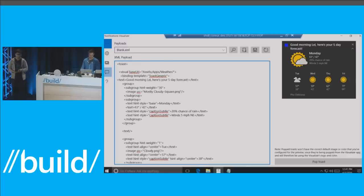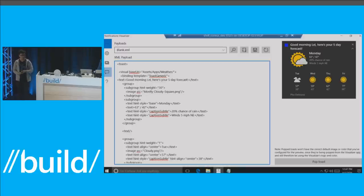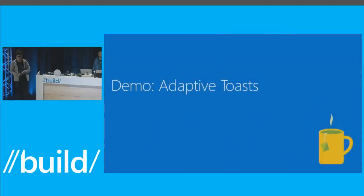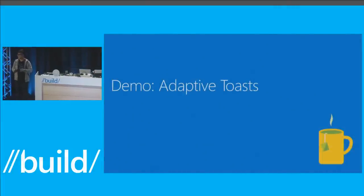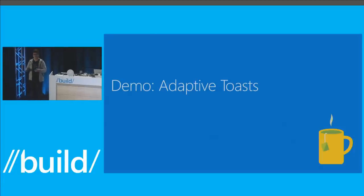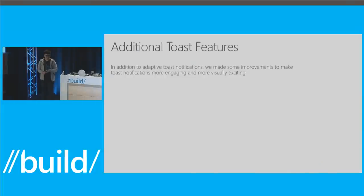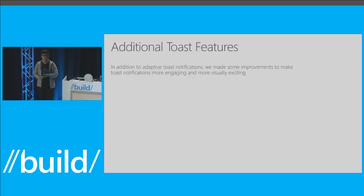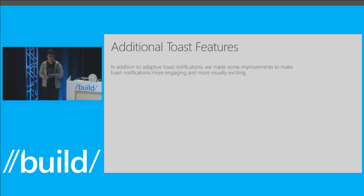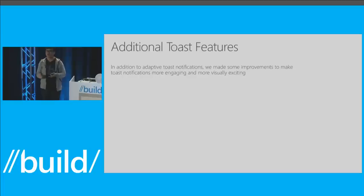In addition to adaptive toast notifications, we also made several UI changes and added new features to make your toast notifications look better and become more engaging. First, we're making images larger inside notification content — whether it's an inline image or an application logo override — so the user can see the content more clearly.